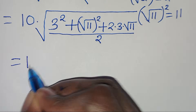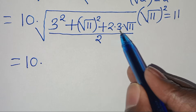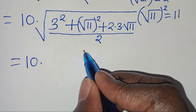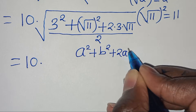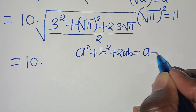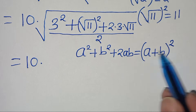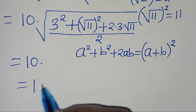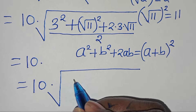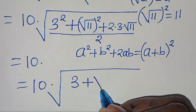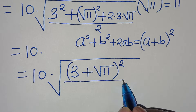The expression inside the square root, which is 3 squared plus square root of 11 squared plus 2 times 3 times square root of 11, is in the form of a squared plus b squared plus 2ab, which equals (a plus b) squared. Applying this algebraic identity, we have 10 multiplied by the square root of (3 plus square root of 11) squared, all divided by 2.